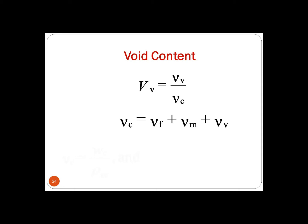The total volume of the composite with consideration of voids is: VC equals VF plus VM plus VV.